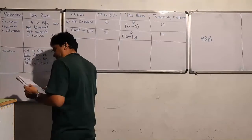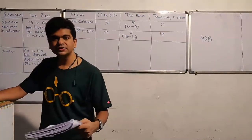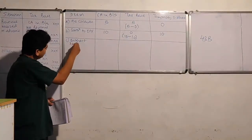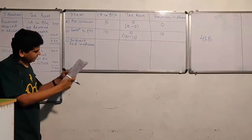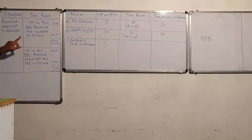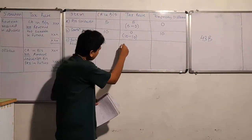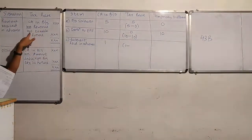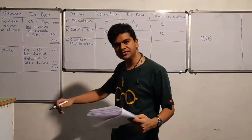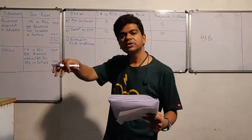Item C: current liabilities include interest of rupees one lakh of the next year received in advance. This is finally the first category item — revenue received in advance. The tax base will be the carrying amount of one lakh less revenue not taxable in future. The interest is taxed on cash basis, so income tax authorities say that since it has been received in cash, tax is payable now.